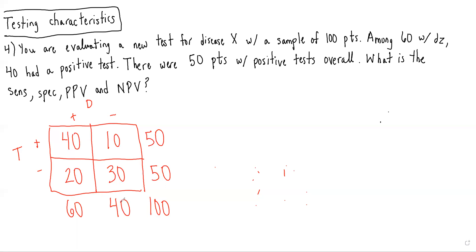So now we've done all the hard part, and now it's just plugging in the numbers into the equations that we know using our conditional probability. Sensitivity is equal to the probability of getting a positive test given you have the disease, which in this case is equal to 40 over 60.